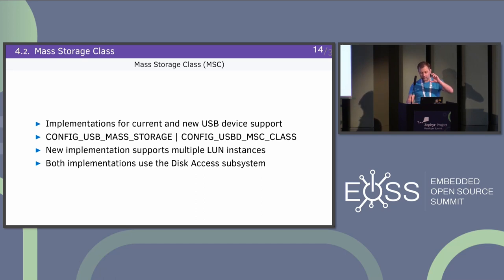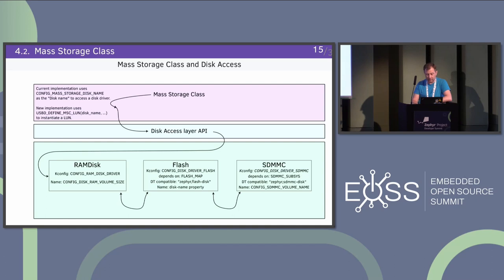The new implementation allows you to have multiple LUN instances — for example if you have two SD cards or two flash disks. Both implementations use a disk access subsystem as backend for block devices. The mass storage class is on top and uses the disk access API. Each driver in the API, if enabled, is a node in a doubly linked list. You pass the argument to the disk access API with the name of a disk and it selects the right one for write, read, or whatever access.